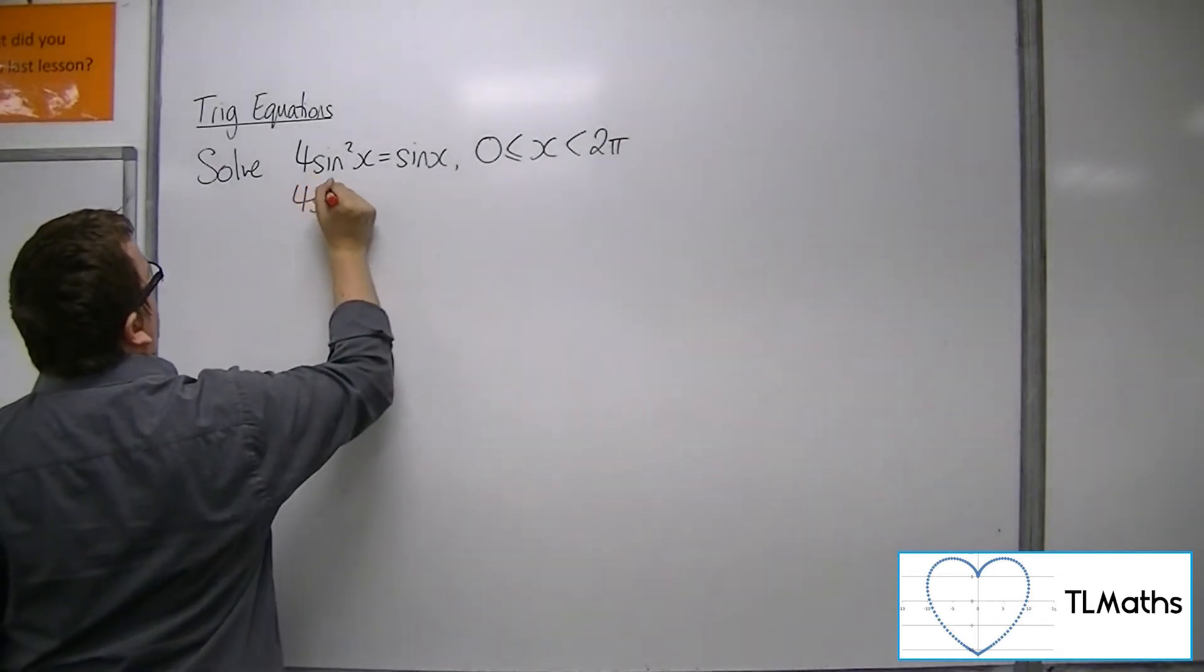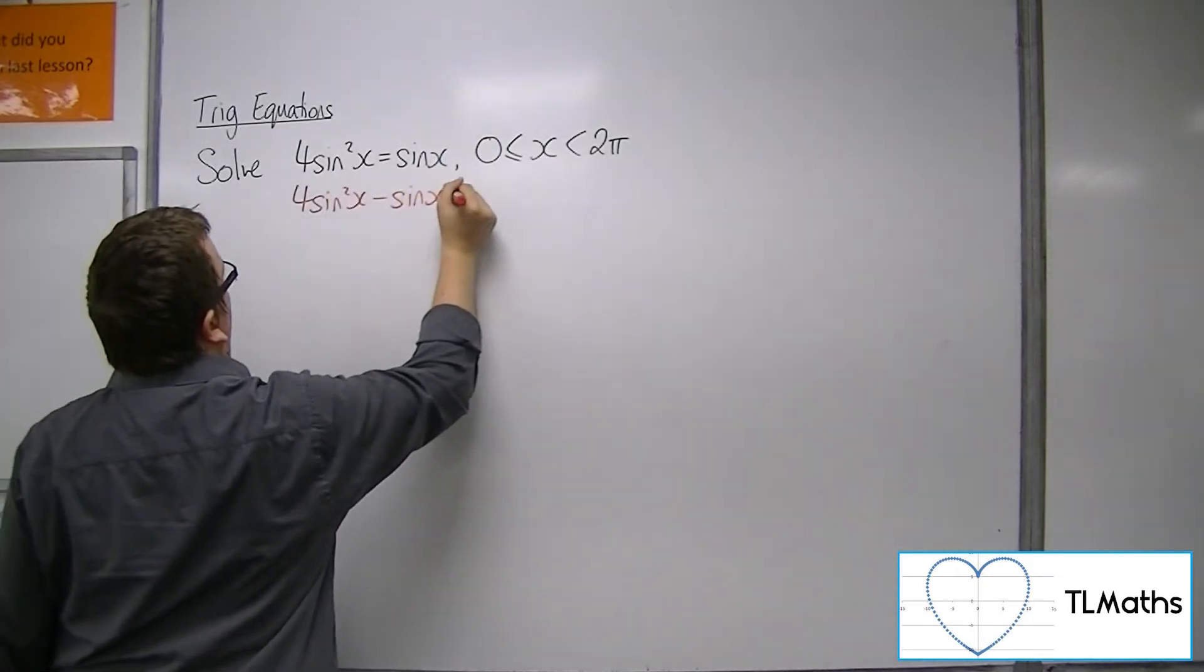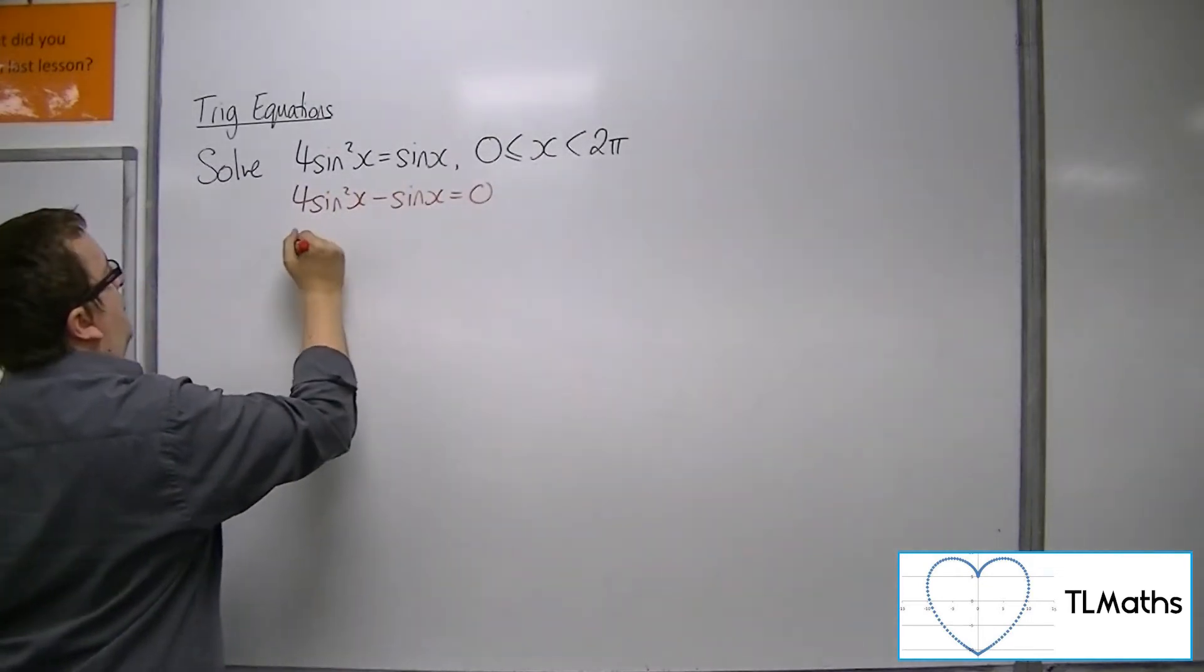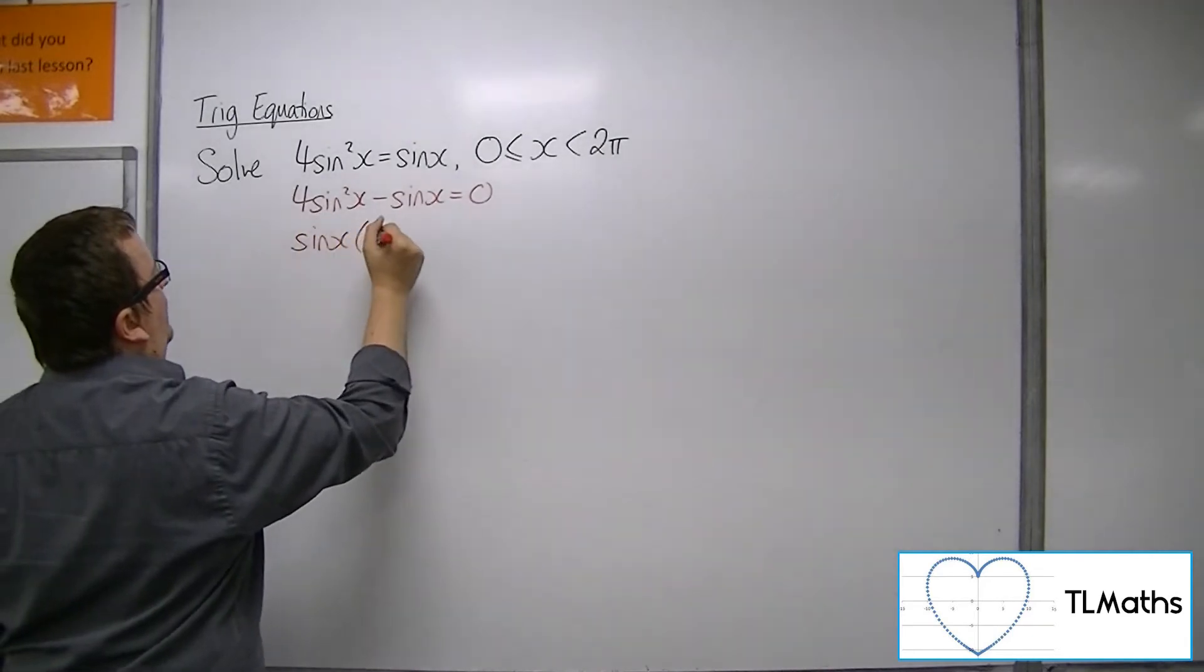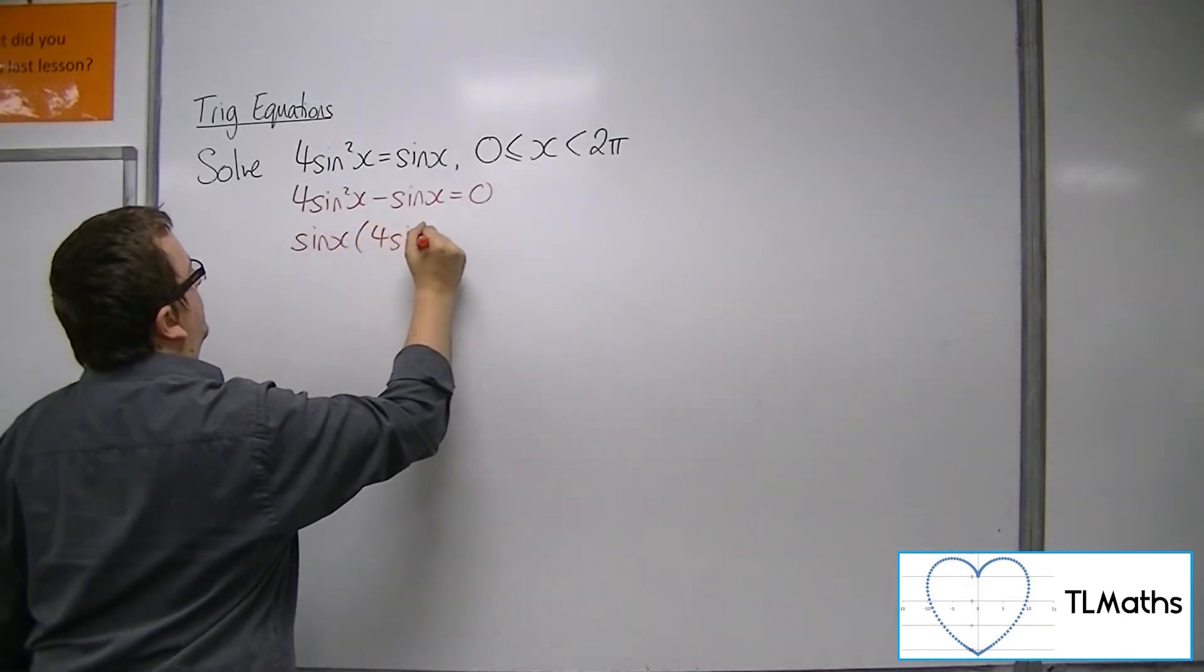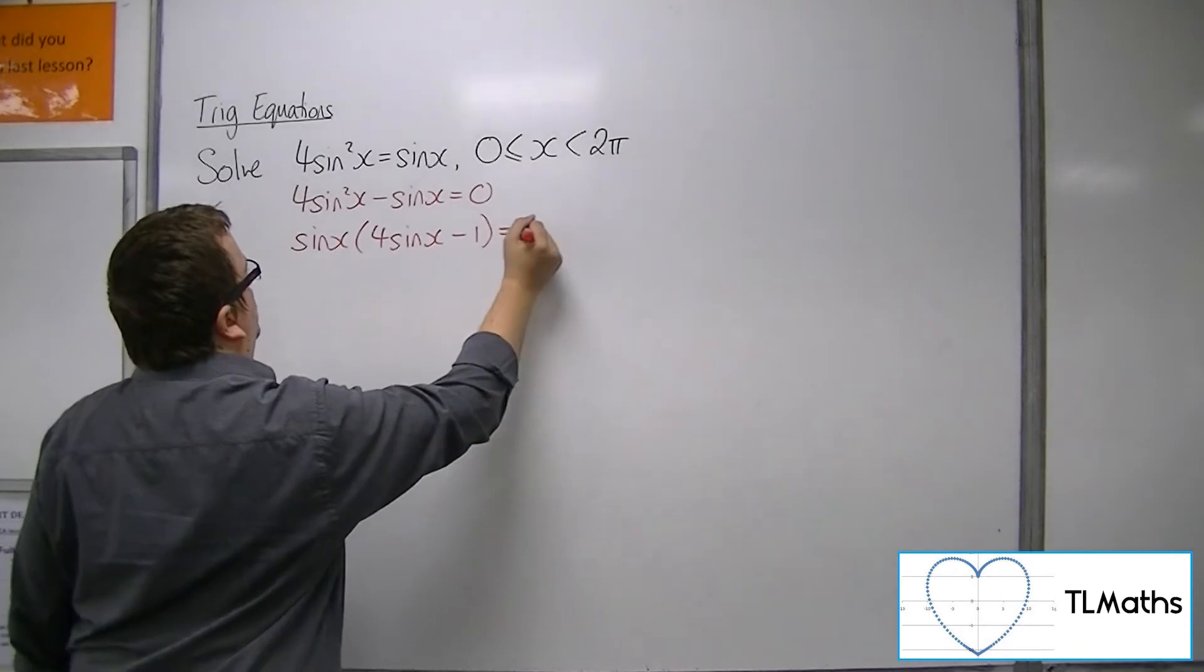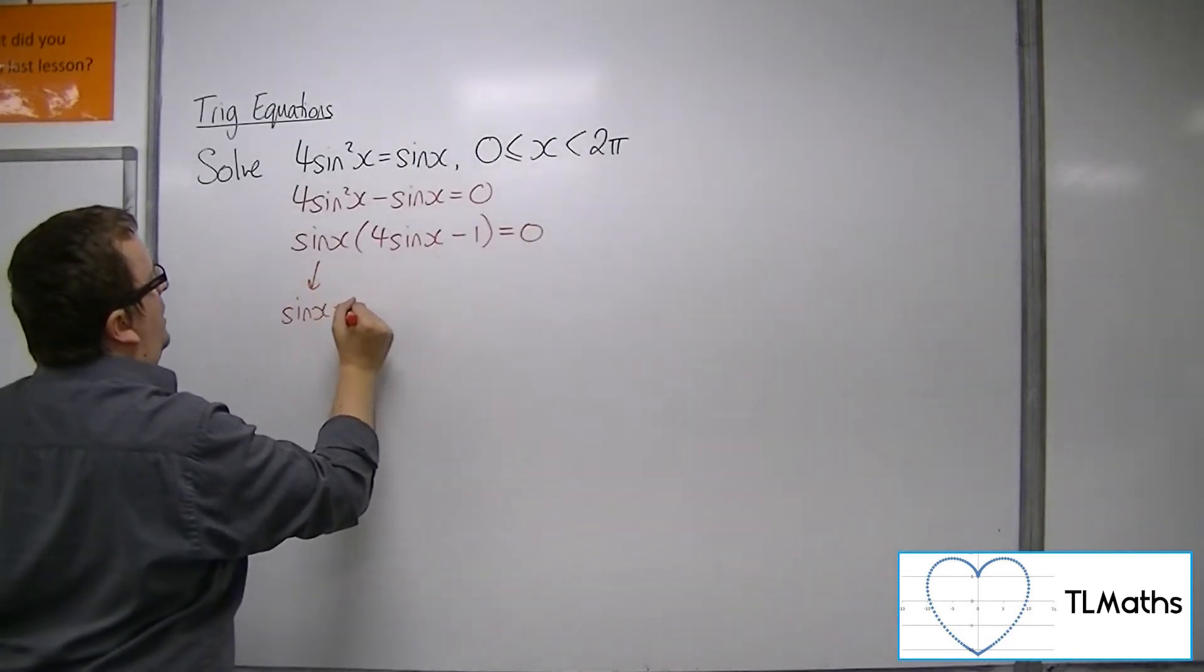Subtract sine x from both sides of the equation, and then factorise sine x out of a single bracket, like so.